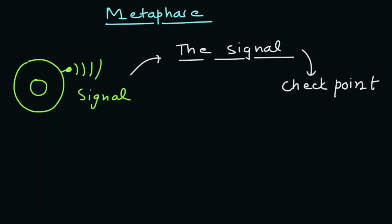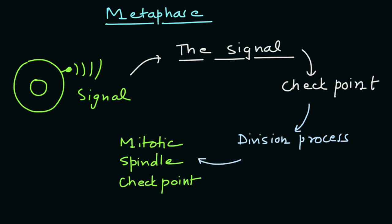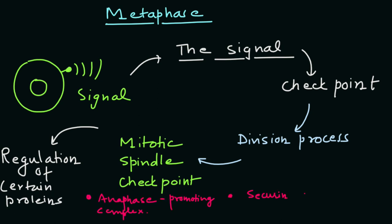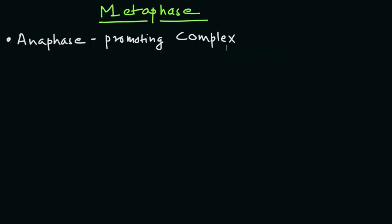This signal creates a checkpoint in the cell division process known as the mitotic spindle checkpoint, which is controlled by the regulation of certain proteins such as the anaphase promoting complex, securin, and separase.